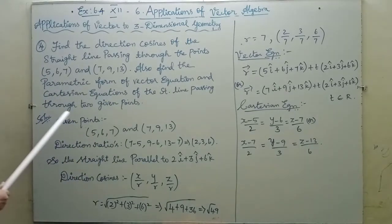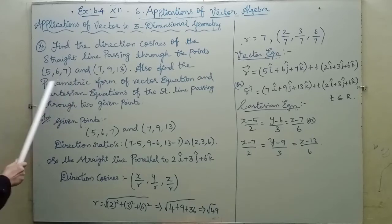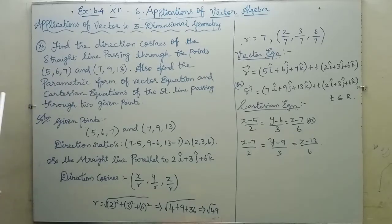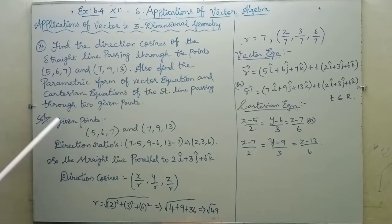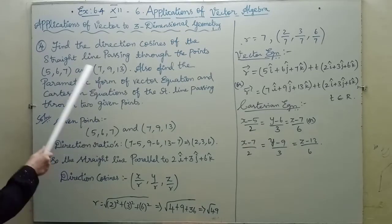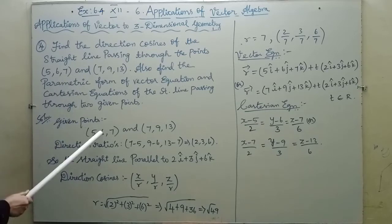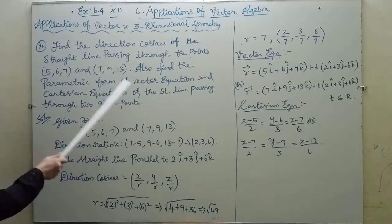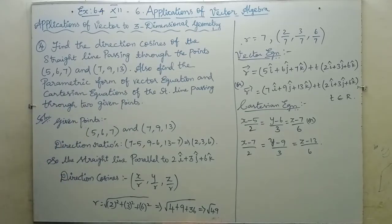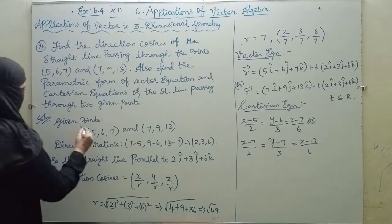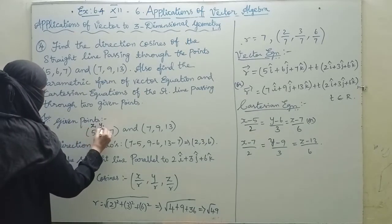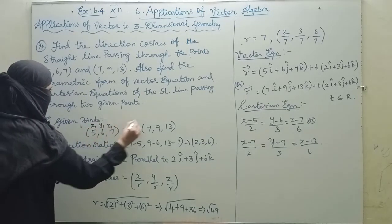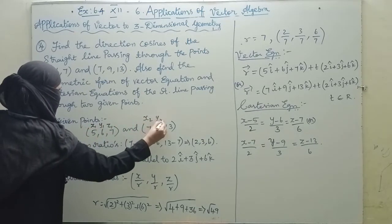The straight line passes through 2 given points. The given points are (5, 6, 7) and (7, 9, 13). Label the first point as (x1, y1, z1) and the second point as (x2, y2, z2).